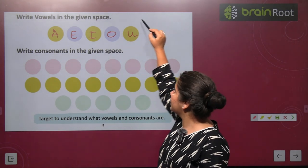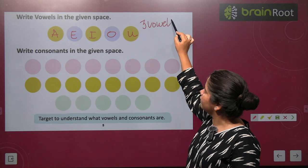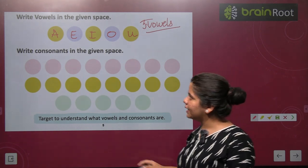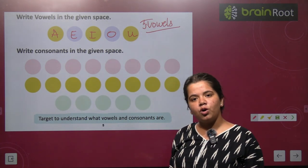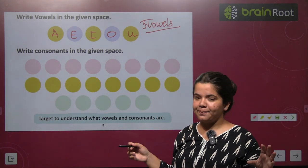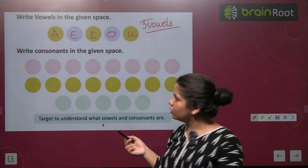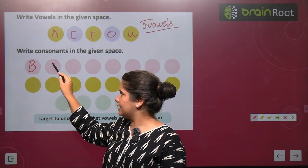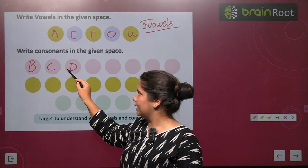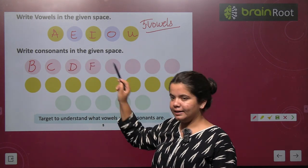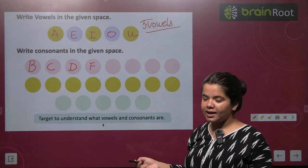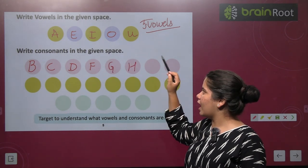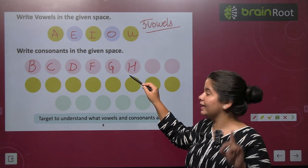We have five vowels. Next, we have written the consonants. All letters except the vowels are consonants. Let's go through them — is A a consonant? No. B? Yes. C, D — is E a consonant? Absolutely not. Then F, G, H — is I there? Absolutely not. J...